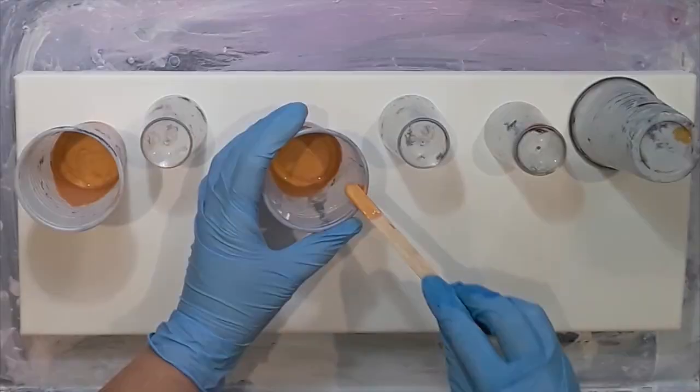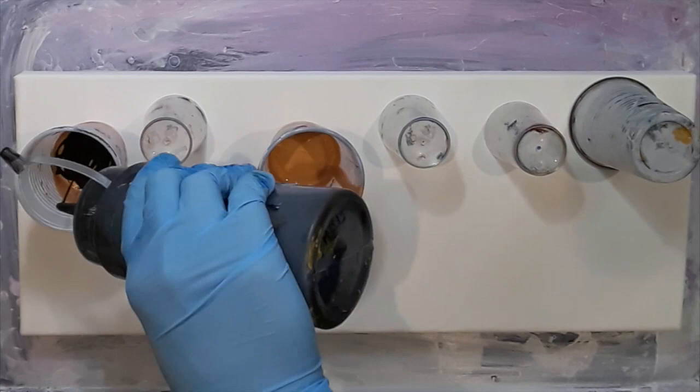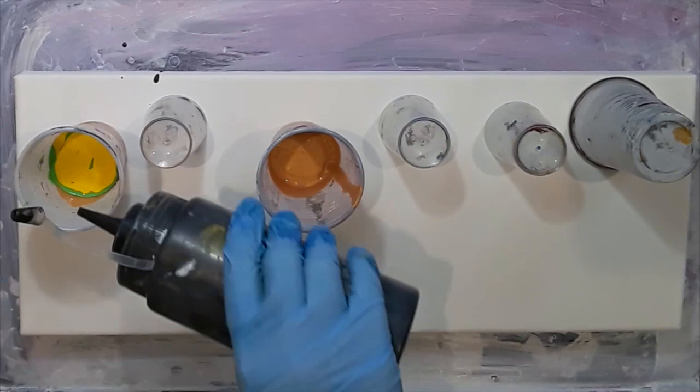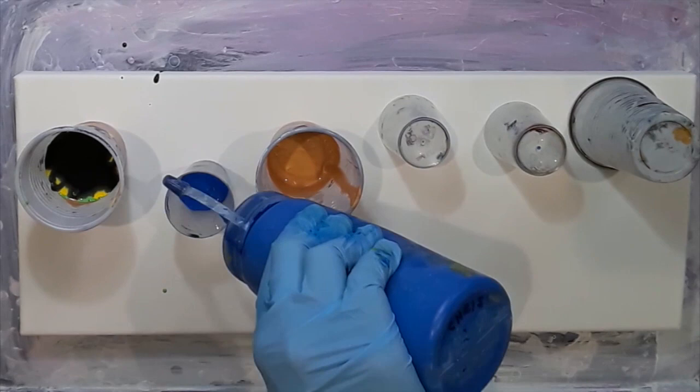In the first cup after the gold I put black in. I put quite a lot of black in. I love the combination of black and gold together. Then I hit it with the green and then surprise surprise yellow and added some more black. This was going to be one of my weirdest cups.